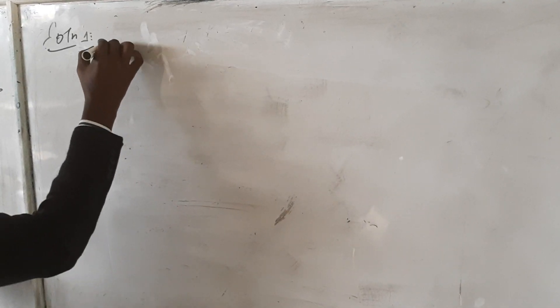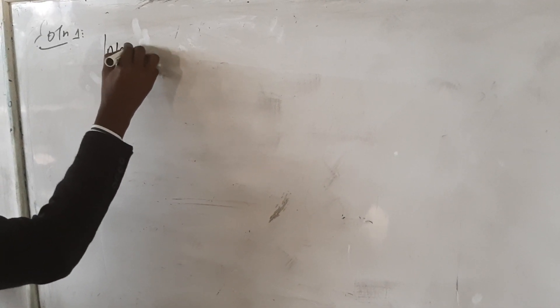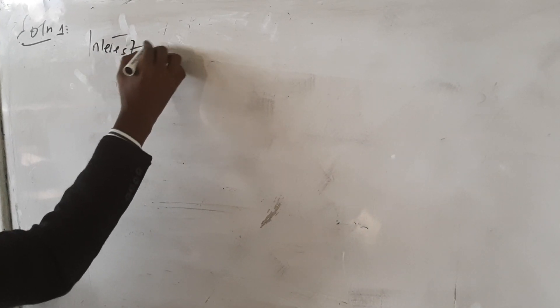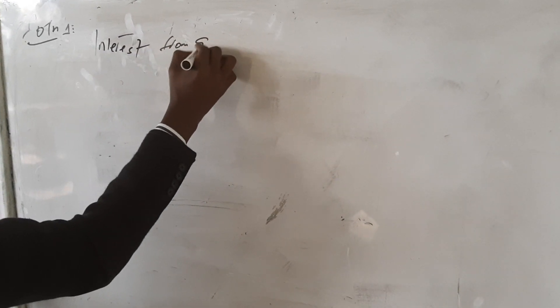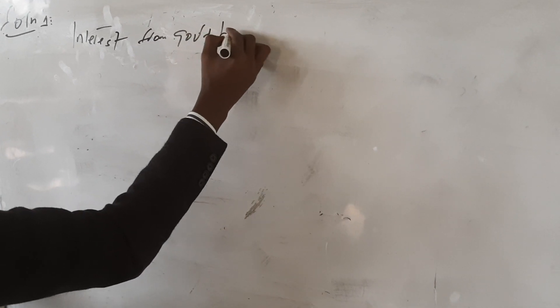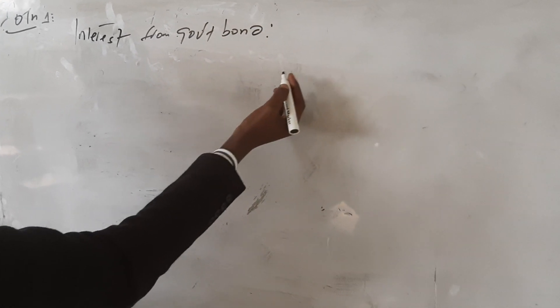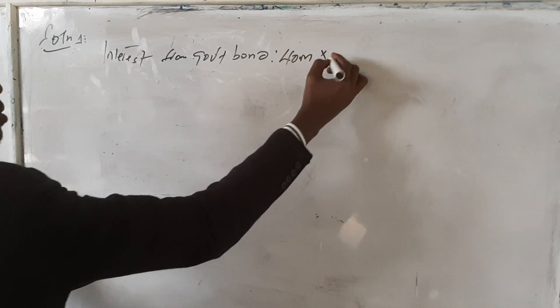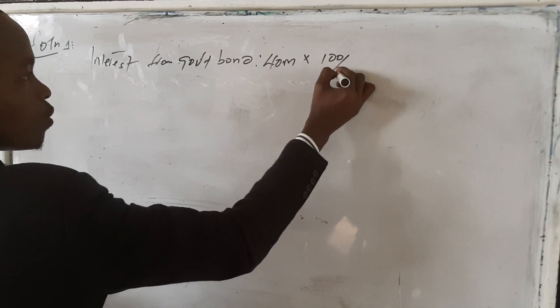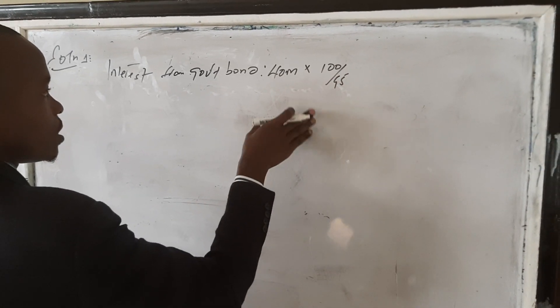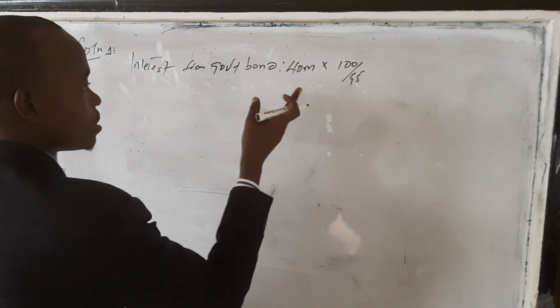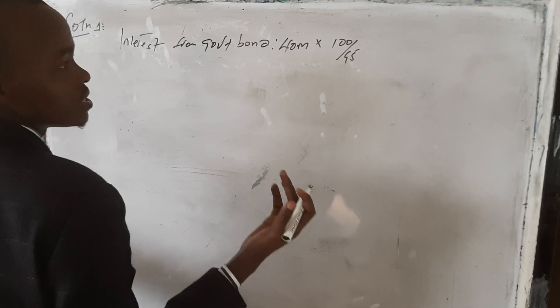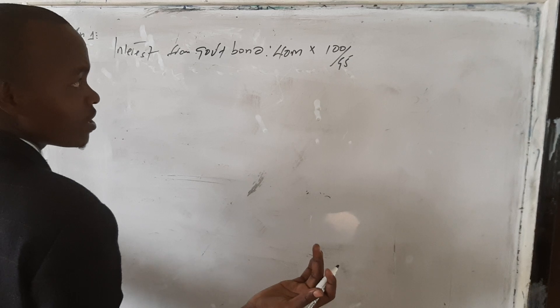You need to show the interest from the government bond. The interest here is 40 million times 100 over 95, because the tax is 5%. This tax is normally a final tax.